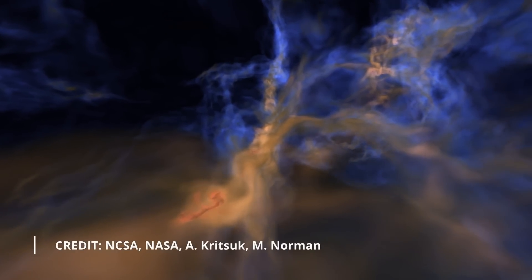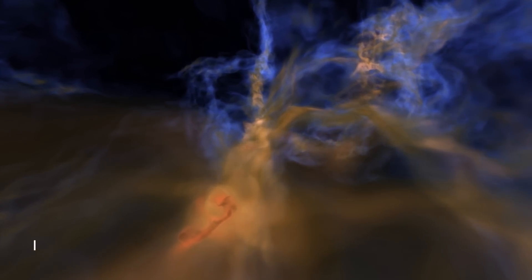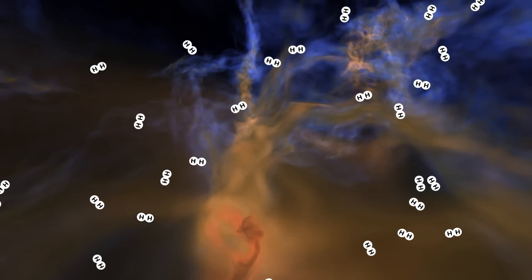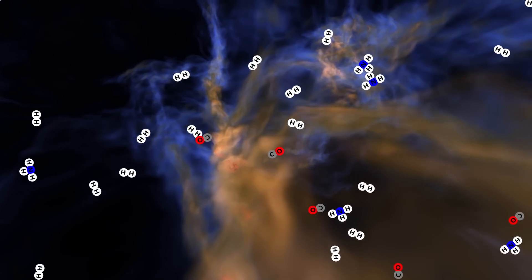Typically, molecular clouds exhibit key features that characterise their behaviour and composition. These clouds are primarily composed of cold, dense gas, predominantly molecular hydrogen with trace amounts of other molecules such as carbon monoxide, ammonia and various organic compounds.